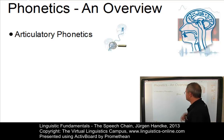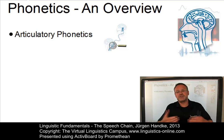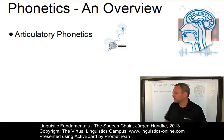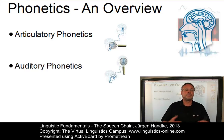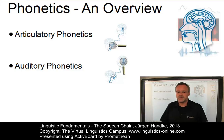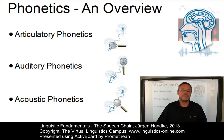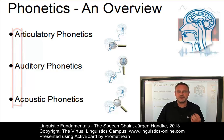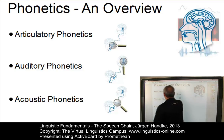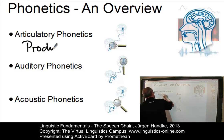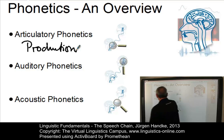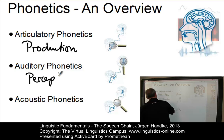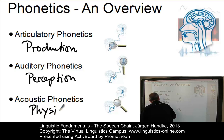One viewpoint is referred to as articulatory phonetics, which studies how speech sounds are produced. Auditory phonetics studies the way in which humans perceive sounds. And acoustic phonetics, the third branch, studies the physical properties of speech sounds. The names of these three branches all begin with an A. Alternatively, you could use a P and associate them with the following terms: articulatory phonetics — the production of speech sounds; auditory phonetics — the perception of speech sounds; and acoustic phonetics — the physics or physical properties of speech sounds.